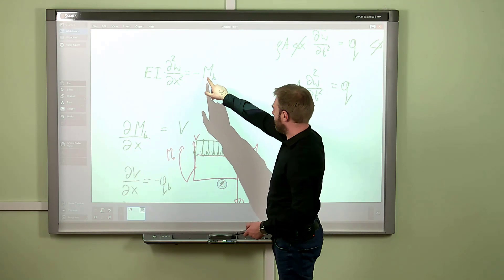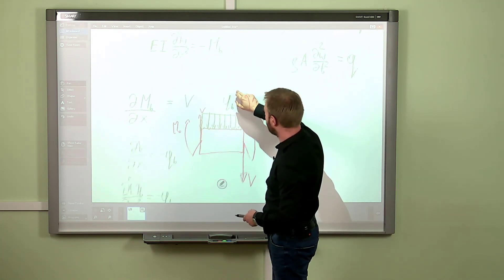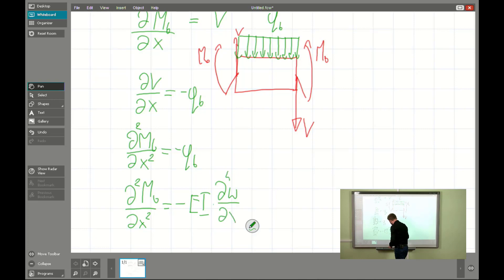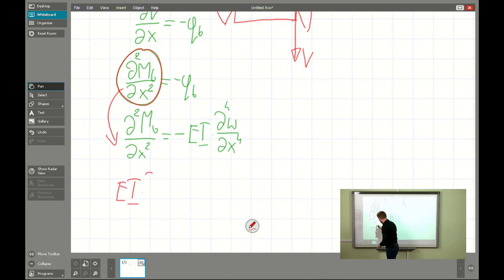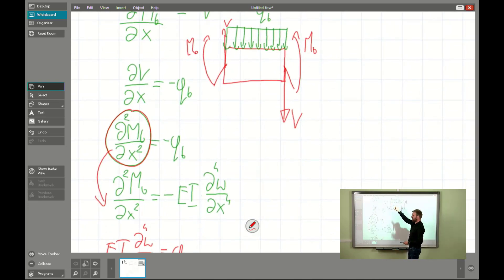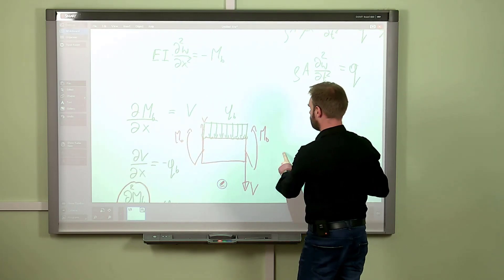If we substitute V as the first derivative of the bending moment, we get that the second spatial derivative of the bending moment equals the negative value of the uniformly distributed load. That formula for the bending moment, taking its second derivative, gives: the second derivative of the bending moment equals minus EI times the fourth derivative of W. Substituting, we get that EI times the fourth spatial derivative of W equals the uniformly distributed load facing downward. Since Q faces upward and QB faces downward, when applying this to our governing equation we must change the sign.